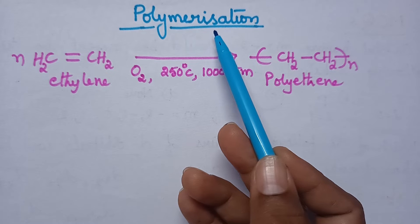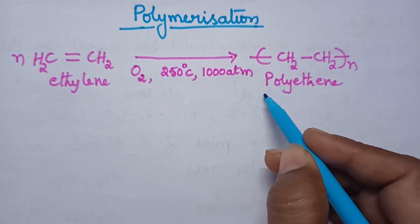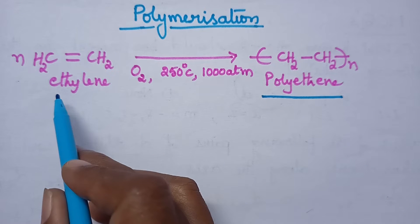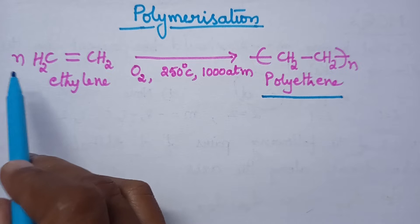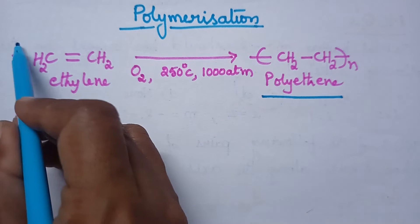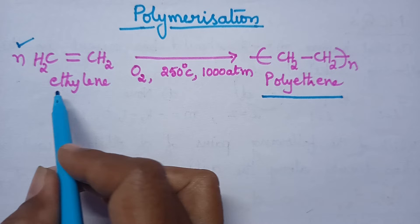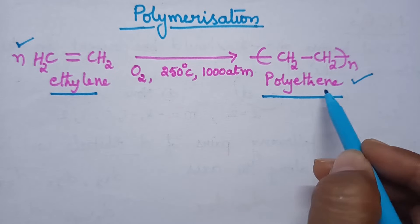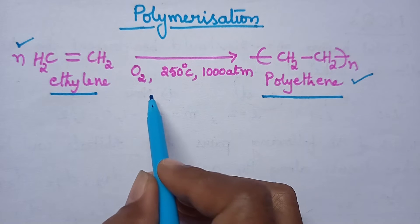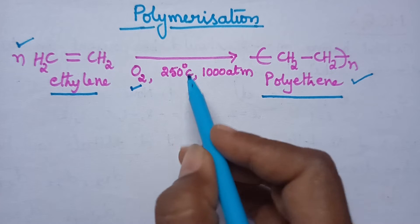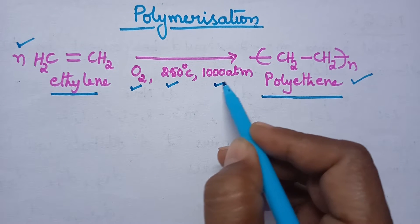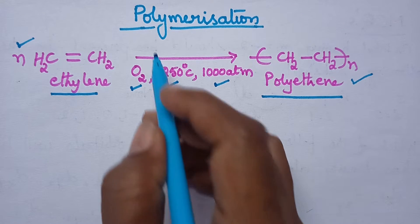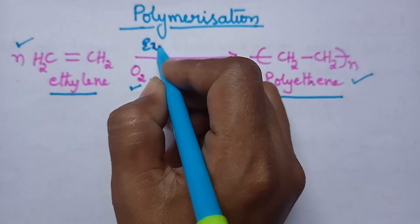In general, polymerization involves the formation of a high molecular weight polymer from the monomers — specifically, the condensation of a large number of monomers to form a high molecular weight polymer. Polymerization takes place in the presence of a catalyst at high temperature and pressure.